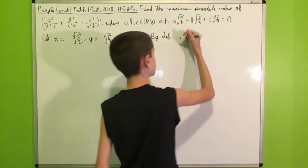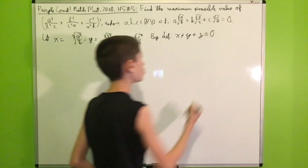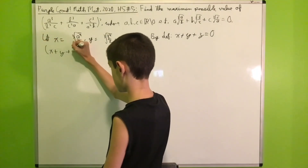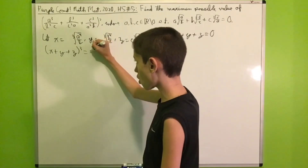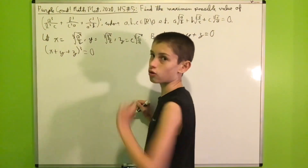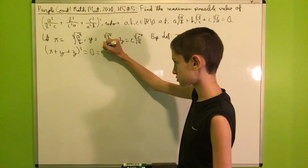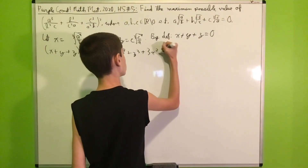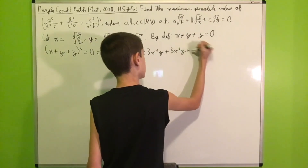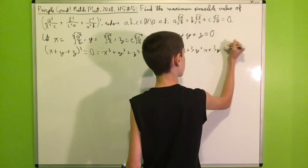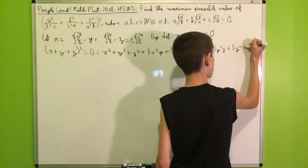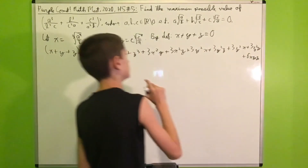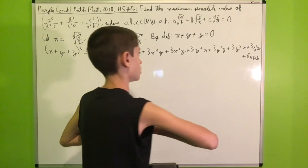By definition, x + y + z = 0. Now we cube both sides of this equality, so (x + y + z)³ = 0. Expanding gives: x³ + y³ + z³ + 3x²y + 3x²z + 3y²x + 3y²z + 3z²x + 3z²y + 6xyz = 0.